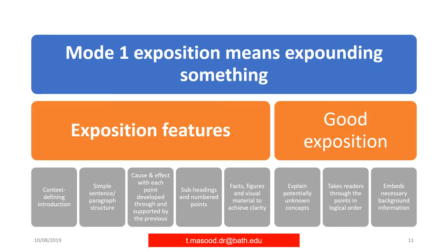Mode one is Exposition — expounding something. Exposition features include: context, defining introductions, simple sentences, paragraph and structure, cause and effect with each point, each point developed and supported by the previous, subheadings and numbered points, and facts, figures, and visual material to achieve clarity — enabling understanding of outcomes and actions. Good Exposition must: explain potentially unknown concepts, take the reader through points in logical order, and provide necessary background information.